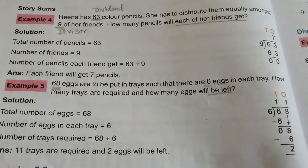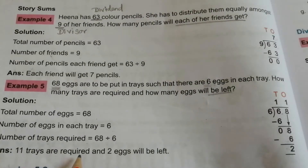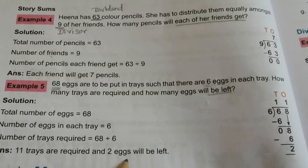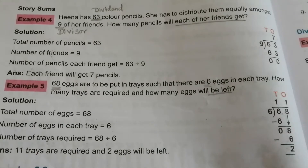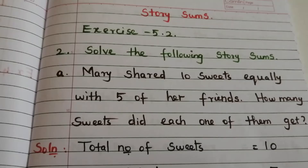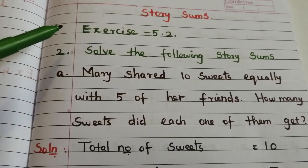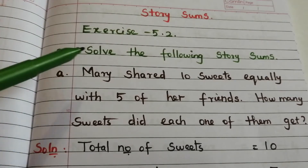So 11 trays are required and 2 eggs will be left. The answer is 11 trays are required and 2 eggs will be left.